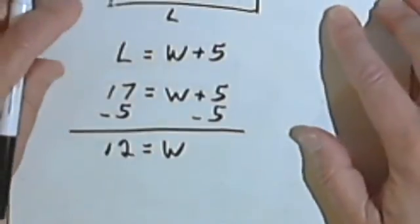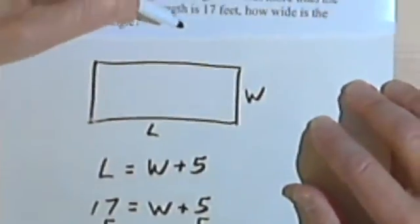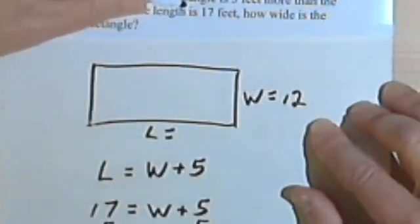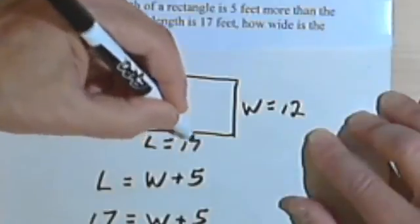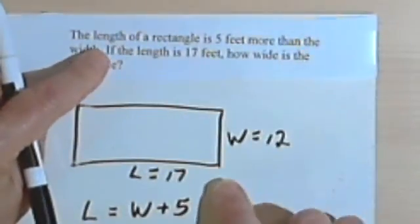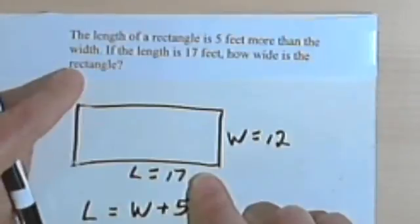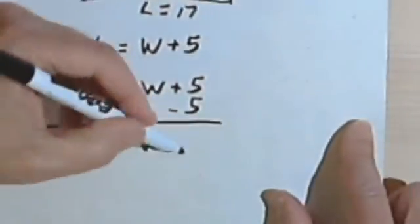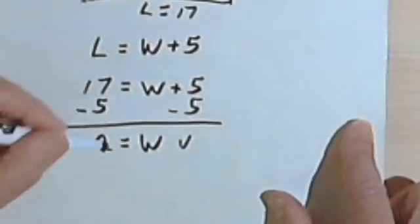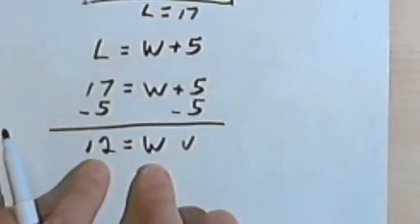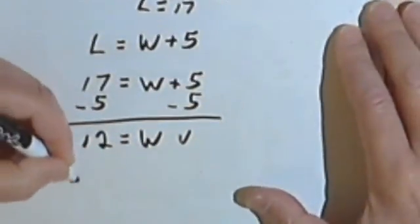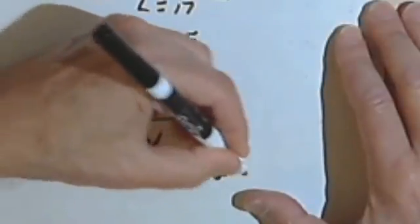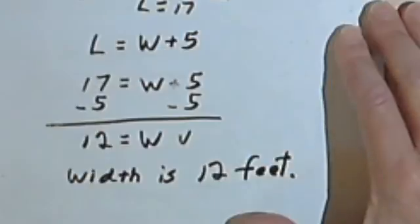And let's see if this checks. So what I'm thinking is that the width is 12 feet, and the length is... they told us the length, that was 17. And it says the length is 5 feet more than the width. Well, 17 is 5 more than 12. So this answer will check. When you write your answer, by the way, don't just leave it as 12 equals W. What you want to write is that the width is 12 feet.